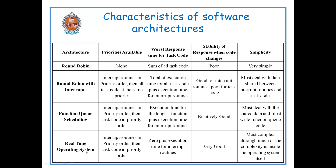In real time operating system, similarly, the interrupt routines are assigned priorities and the task code are also assigned priorities. Whichever has the highest priority will be given importance in this architecture.